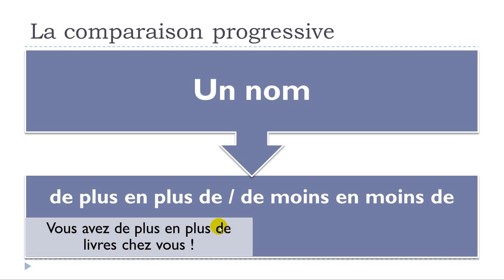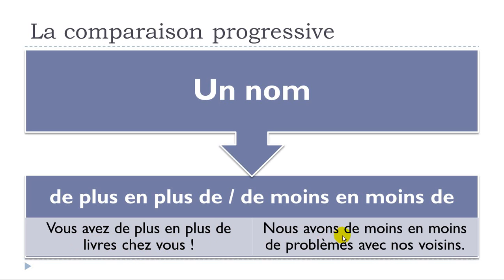You can see that you put de here, and then you will put your word or your noun — livres — chez vous. Nous avons de moins en moins de problèmes avec nos voisins. So it's the same way: you just put de plus en plus, but then you need to remember to put de, and then de moins en moins de.